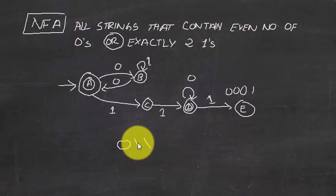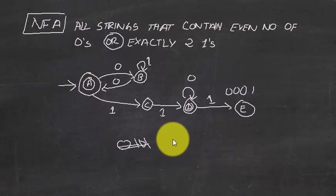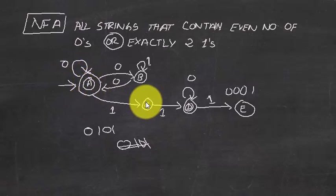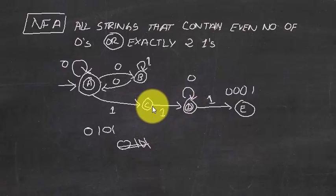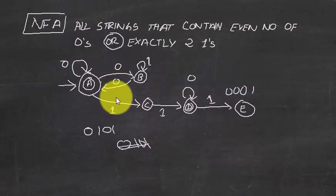For example, for the input 'zero one zero one', if we get zero we stay in the current state, if we get one we move to the next state, and then if we get zero there is nowhere to go. In a DFA we would have to handle all of these operations, but in an NFA it does not matter — you just need to fulfill the main criteria of exactly two ones.